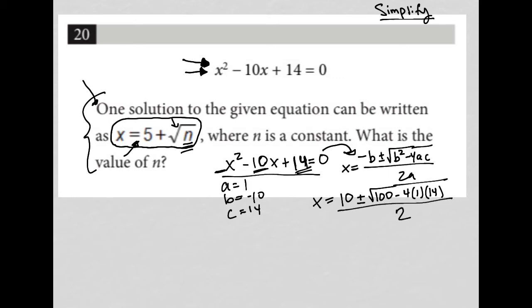What we reduce or simplify under the radical here: 100 minus 4 times 14, 4 times 14 is 56, so then I'd have 100 minus 56, I can't use my calculator so I'm doing the math on the side here, is 44. So this becomes x equals 10 plus or minus the square root of 44 all over 2.